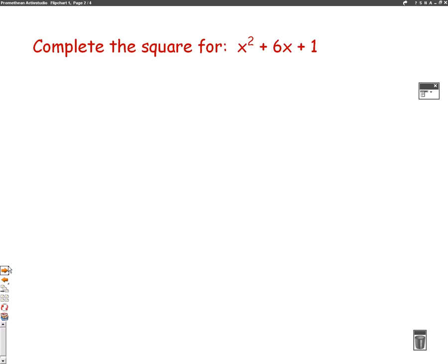The question says, complete the square for x squared plus 6x plus 1. So, completing the square is a way of factorising. And factorising, as we learnt at GCSE, means we need to put it into brackets.